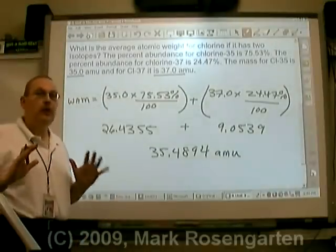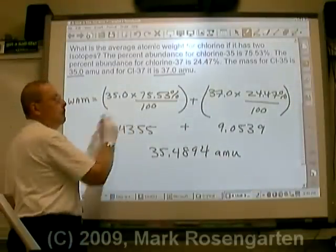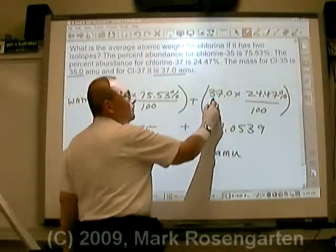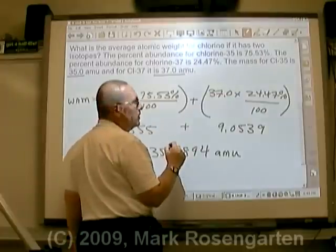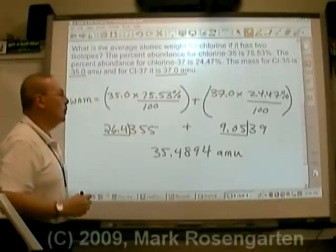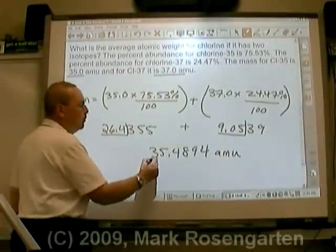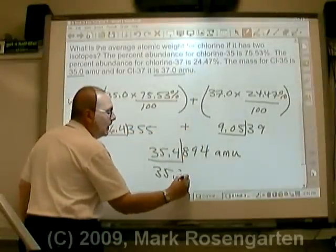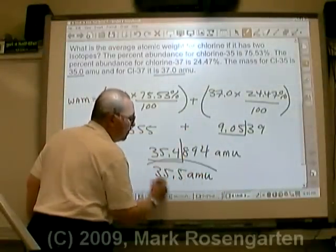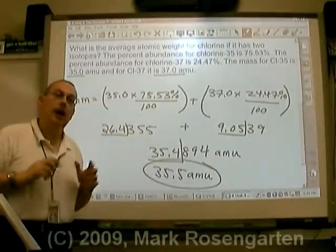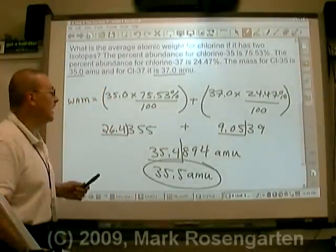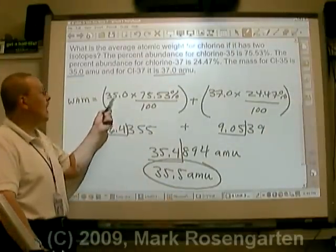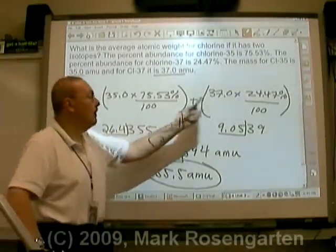Now, of course, we have to worry about significant figures. We have three significant figures and four significant figures, so we're going to go with three significant figures. When we add these two values up, we're going to round to the tenths place, or 35.5 AMU. And that is the weighted average mass of chlorine. You'll notice that the average is much closer to 35 than it is to 37, because 35 makes up far more than 37 does.